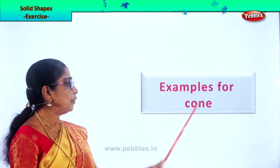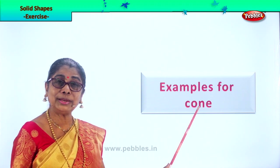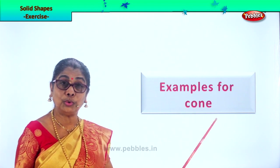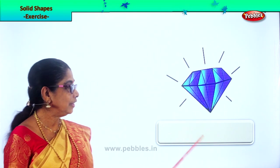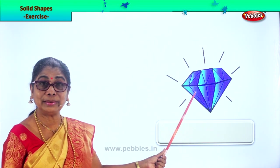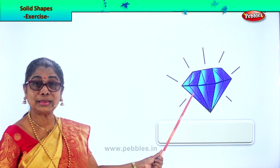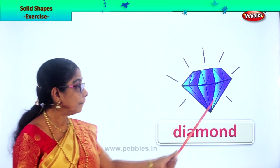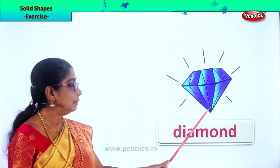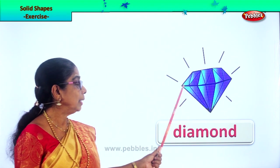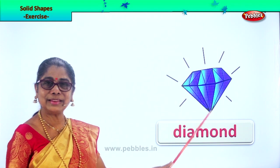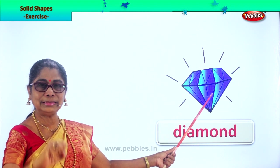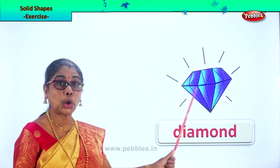Let's look for examples for cone. I'm sure you eat cone ice cream! Examples for cone — look at the first picture. Diamond. Look at the shape — cone shape. This is a cone shape. If it's a diamond, this part gets fixed into the ring. Diamond is a cone shape.